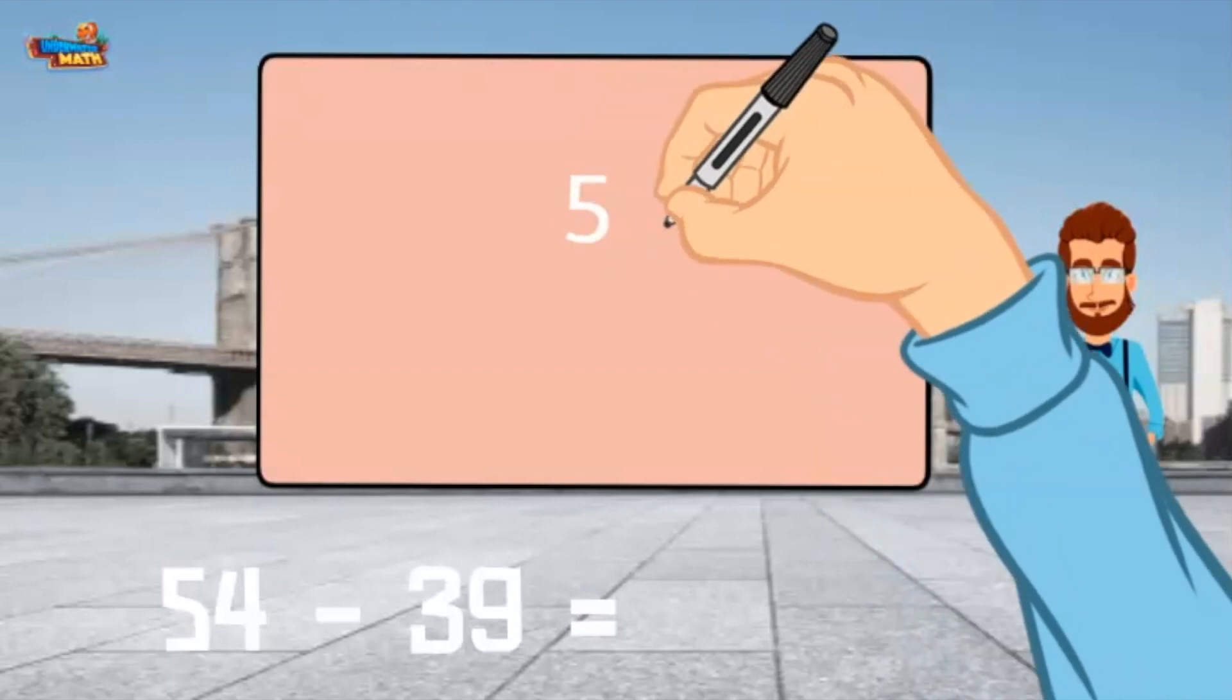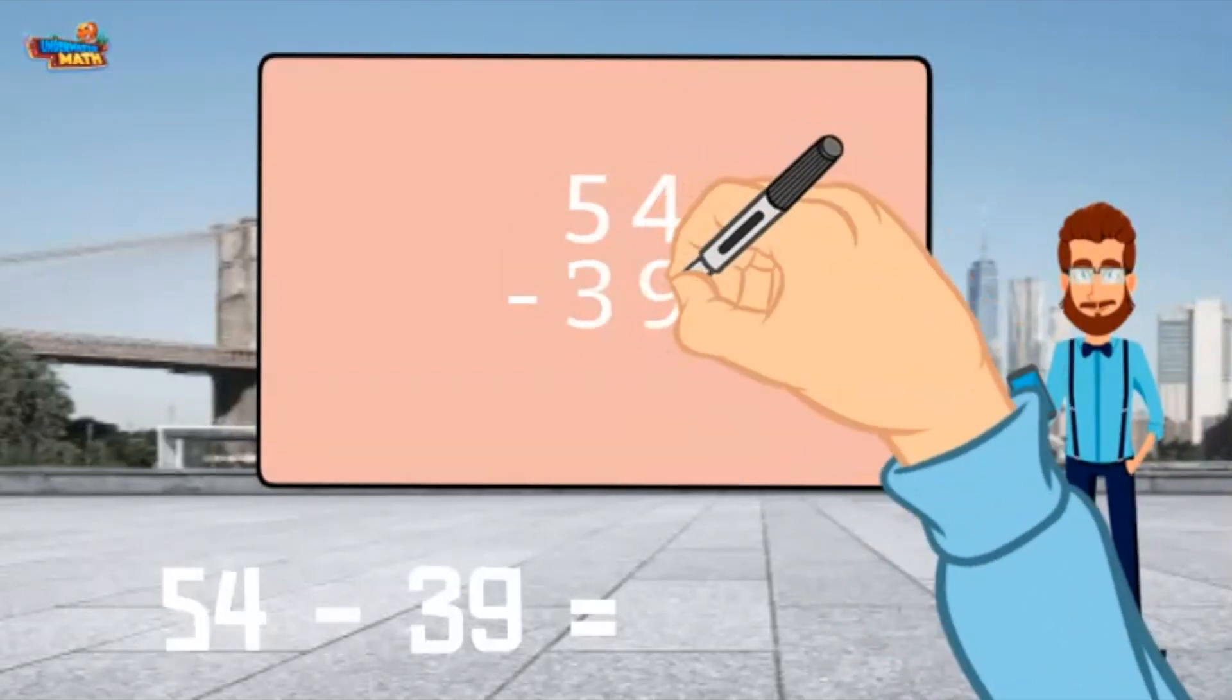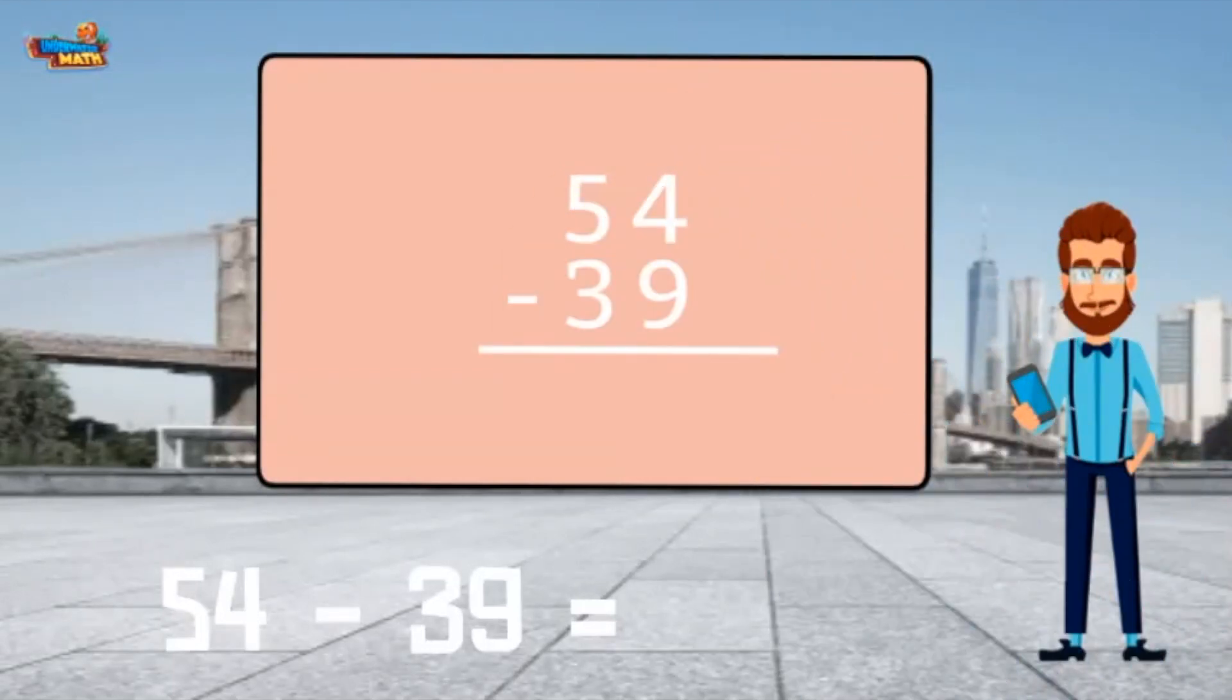A lot of the steps in multi-digit subtraction are the same. Start by stacking the numbers on top of one another. Go to the 1's place and ask yourself, is there more on the floor? If there is more on the floor, we go next door and get 10 more. 9 is larger than 4, so we have to go next door and get 10 more.